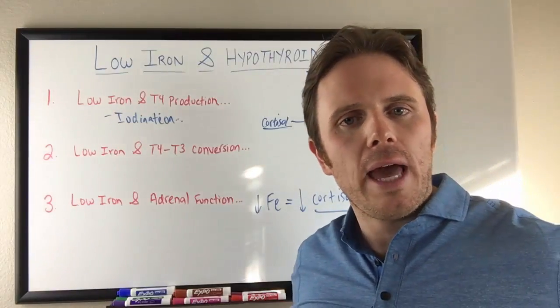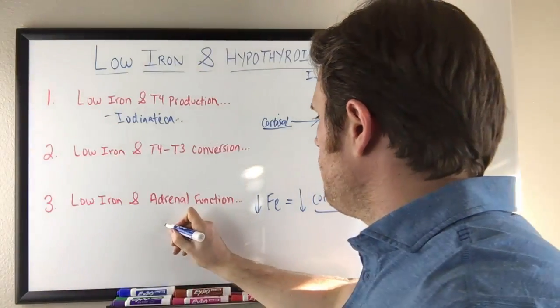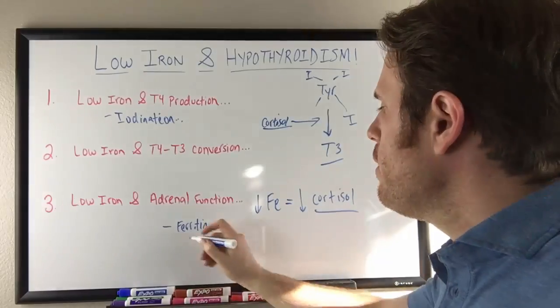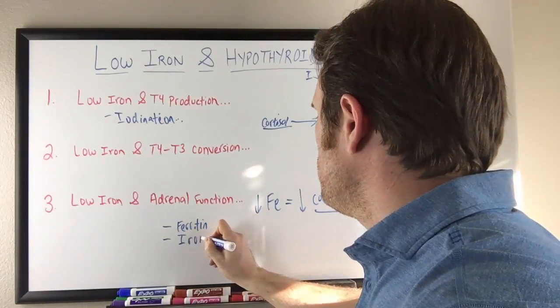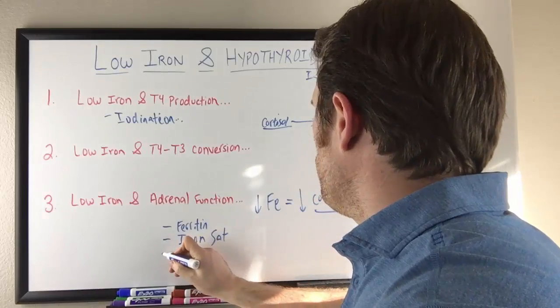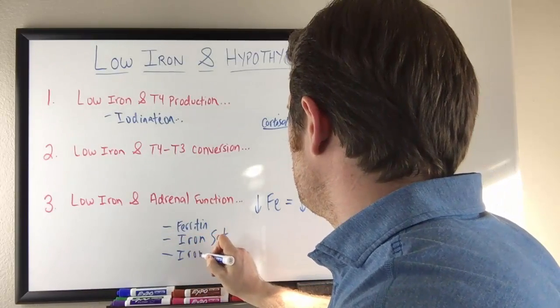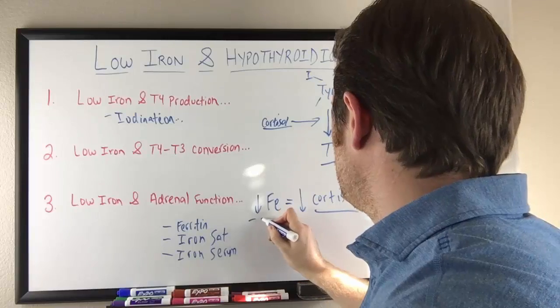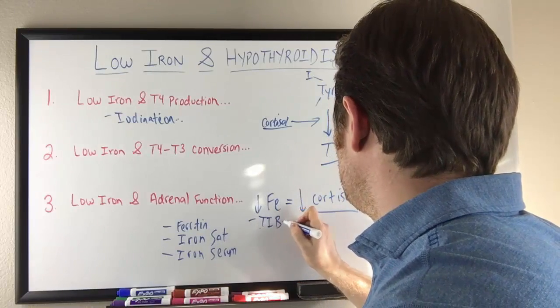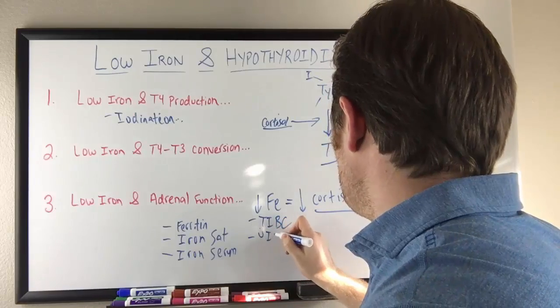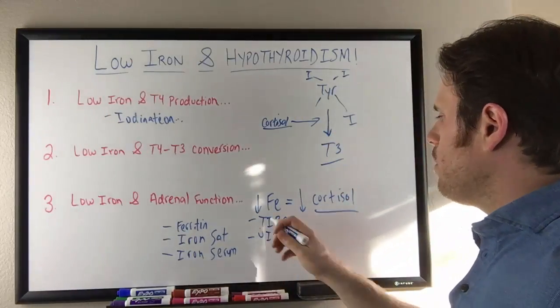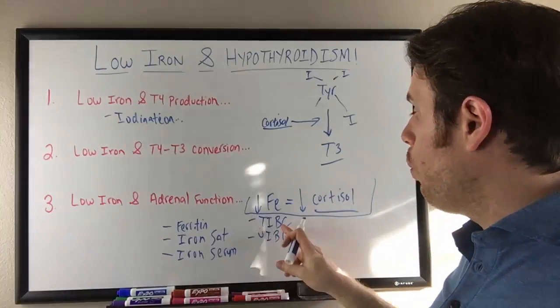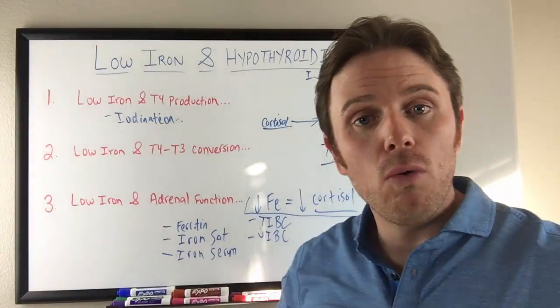And what are the big tests that we want to do to look at iron levels to make sure we have enough? It's going to be ferritin. That's a storage form of iron. Iron saturation. Iron sat. We're going to look at iron serum. We're going to look at TIBC, which is a binding protein. And we can also look at UIBC. These are binding proteins that are going to look at iron. So these binding proteins typically go high when iron is low. Ferritin is going to go low when iron is low.